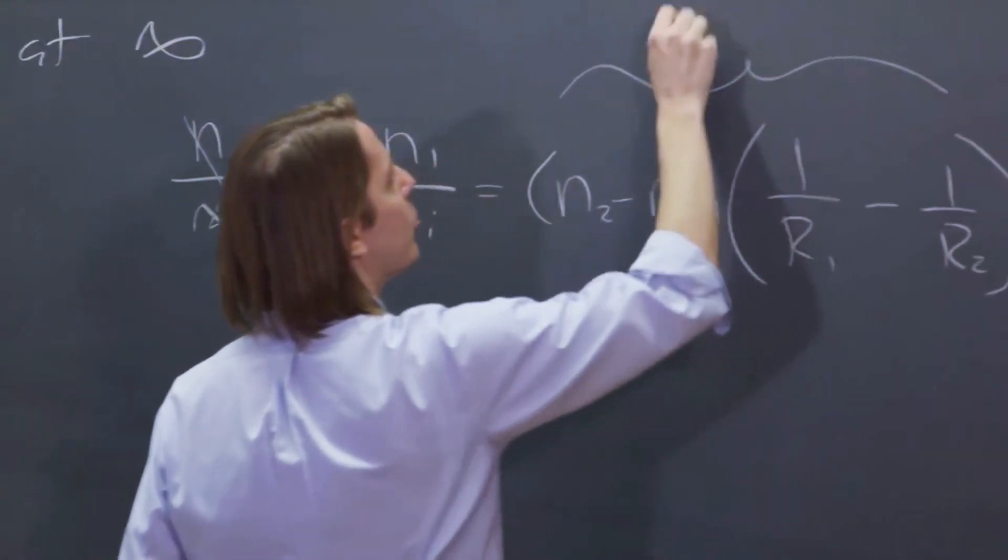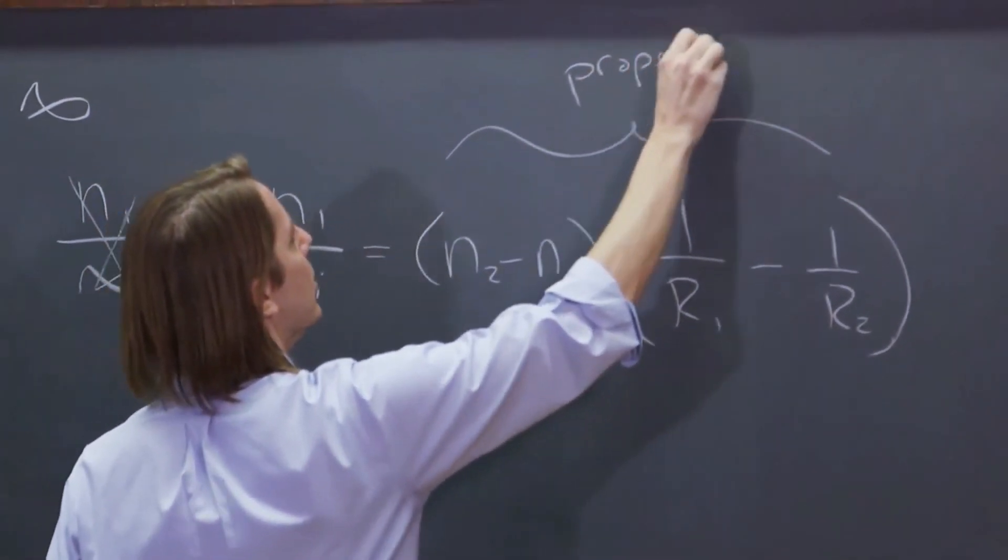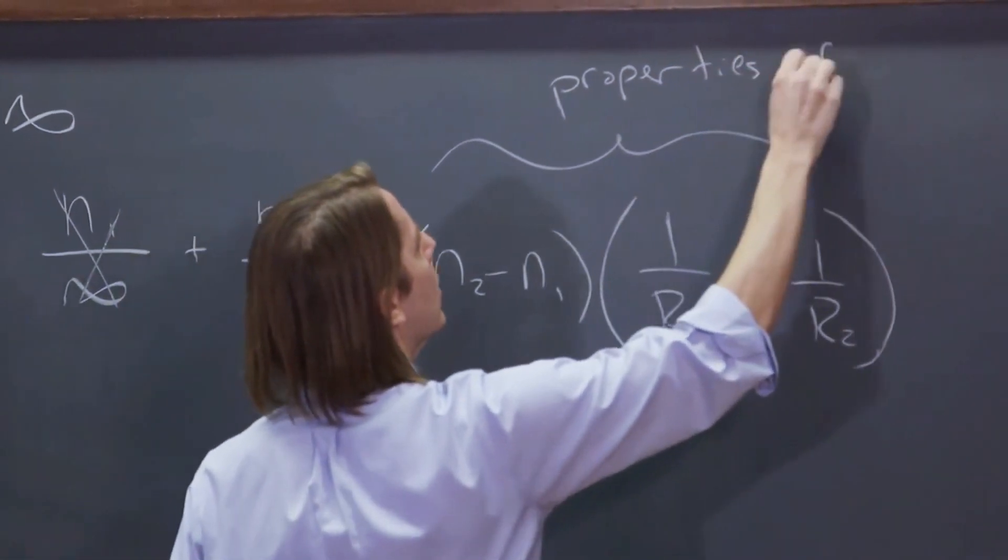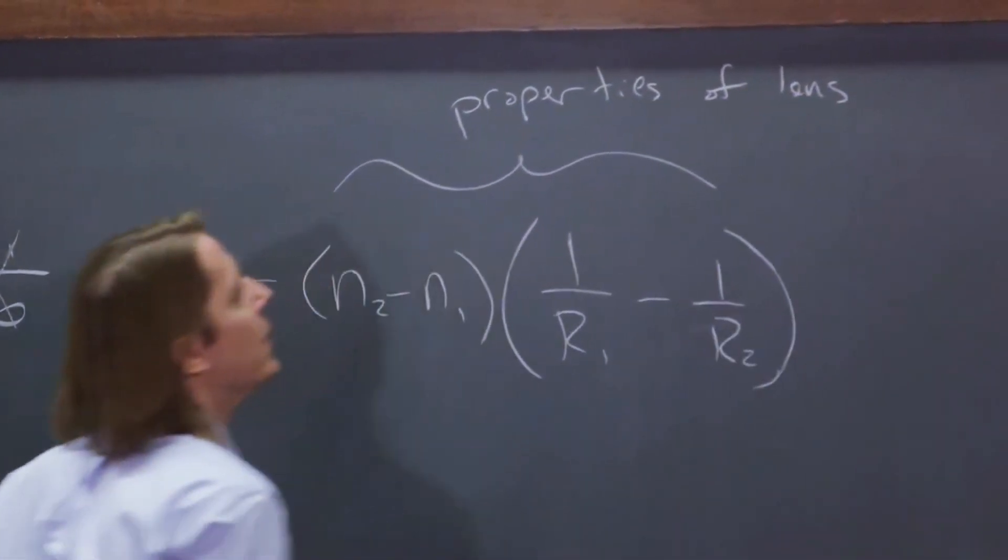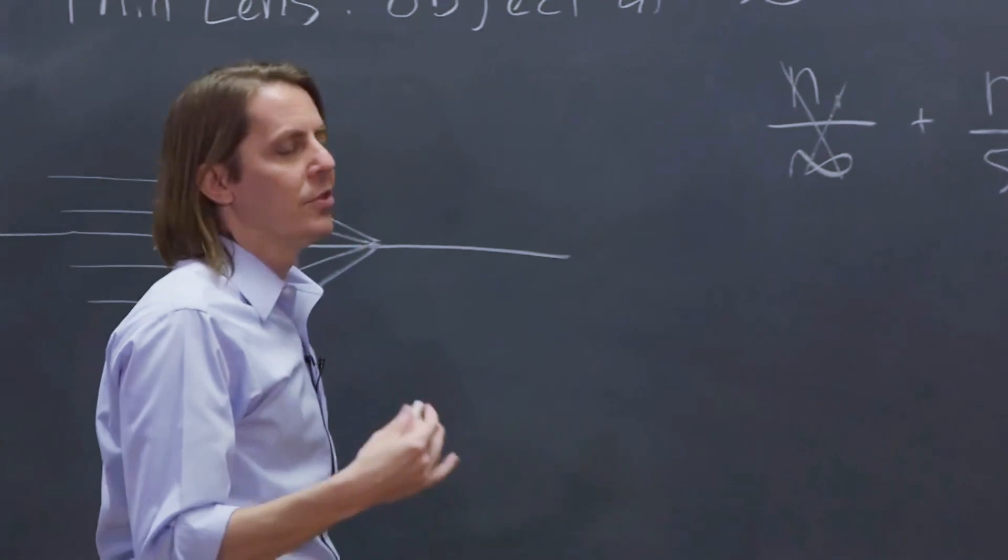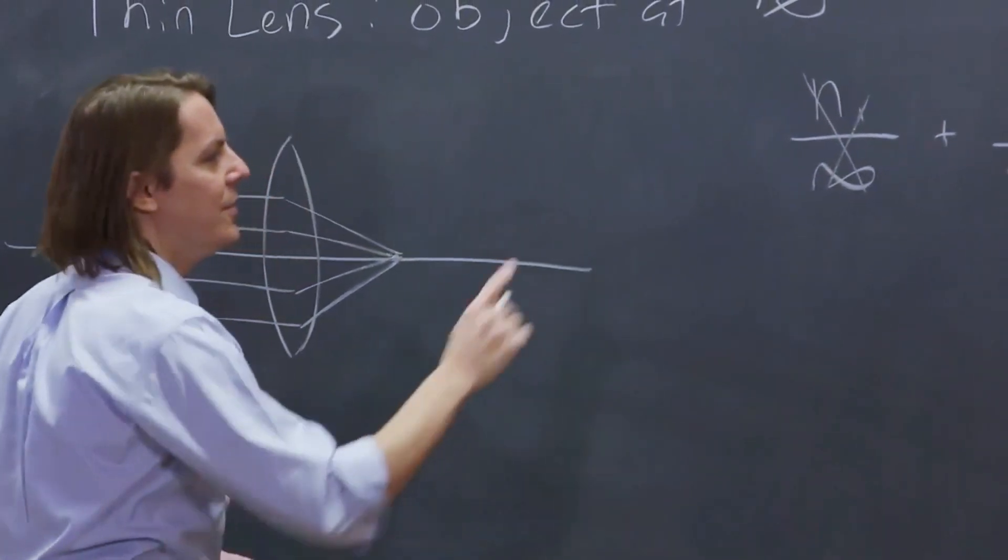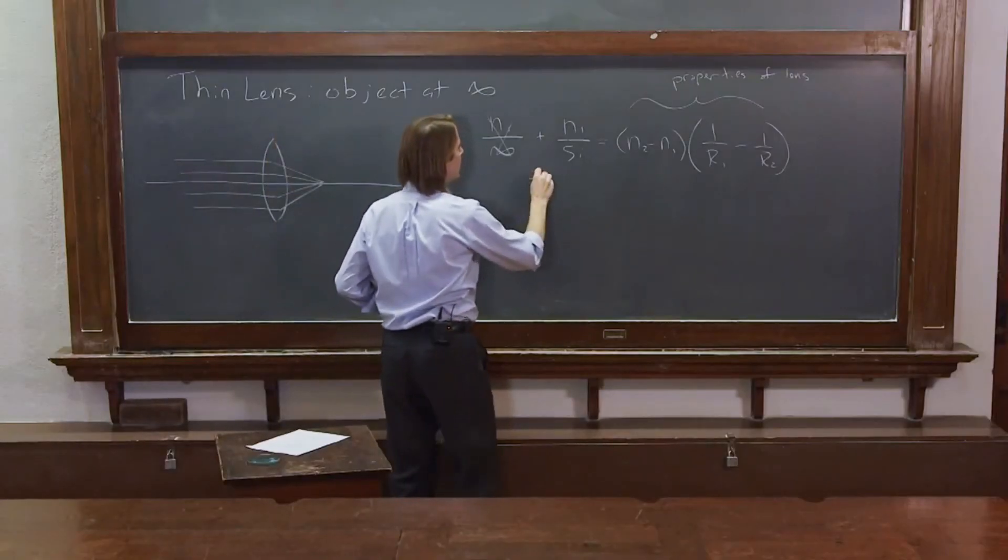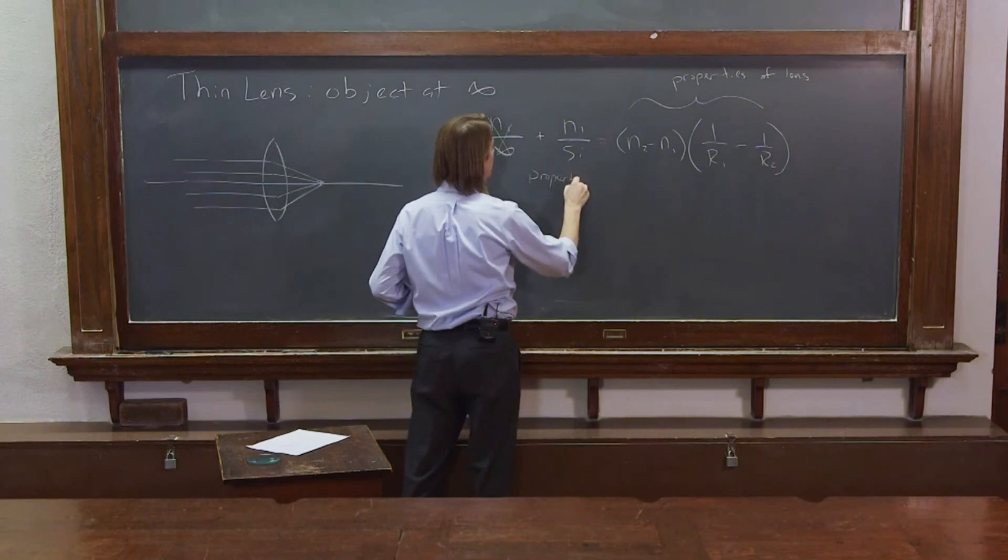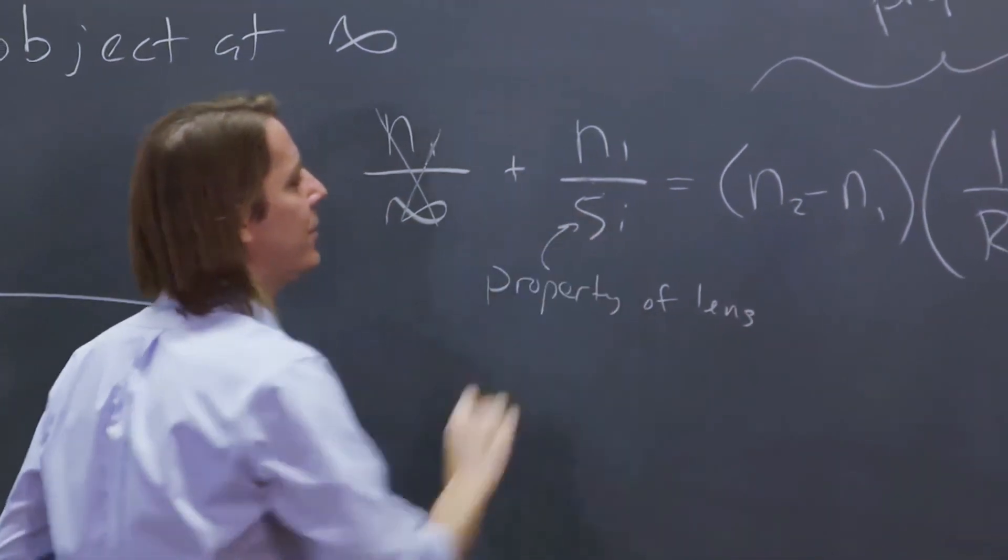But these are all properties of the lens. So this is a special condition that this distance must also be a property of the lens. And this is what we call the focal length.